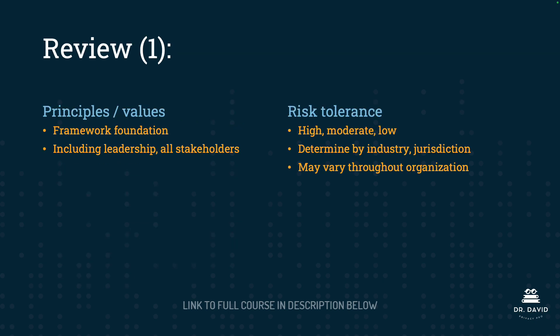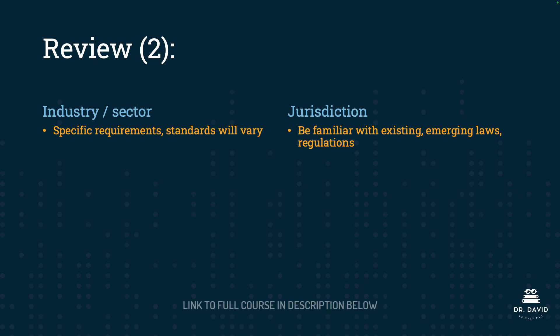In this lecture, we looked at a checklist for establishing your organization's own AI governance framework. The mnemonic device to help you remember this checklist is 'pigs risk injury jumping about acrobatically.' Remember that principles and values serve as the foundation for your framework, and it's important to include leadership and all other stakeholders at this stage. Risk tolerance — your organization's ability to bear risk — is usually rated high, moderate, or low, and can be determined by your industry and jurisdictions. It may also vary throughout the organization. With regards to industry and sector, there are likely to be specific requirements, particularly across highly regulated sectors.